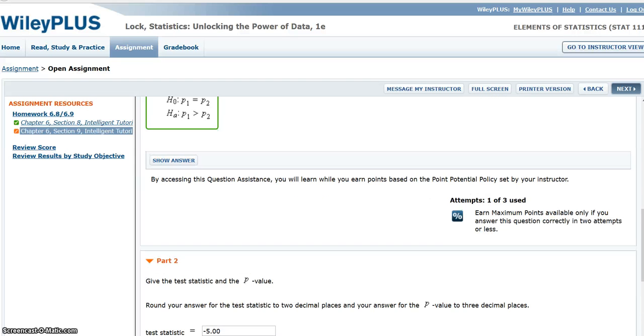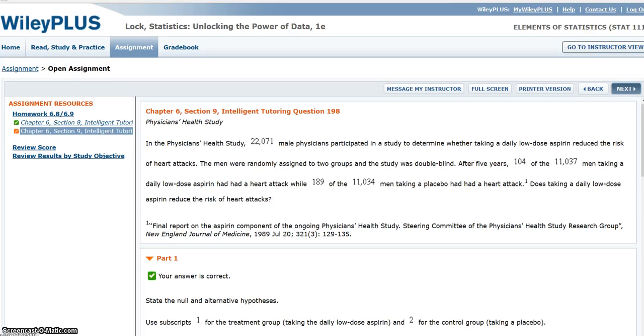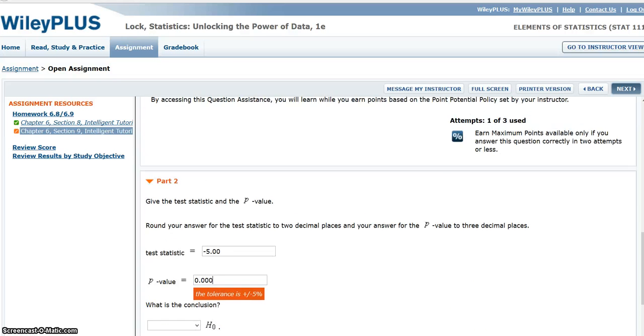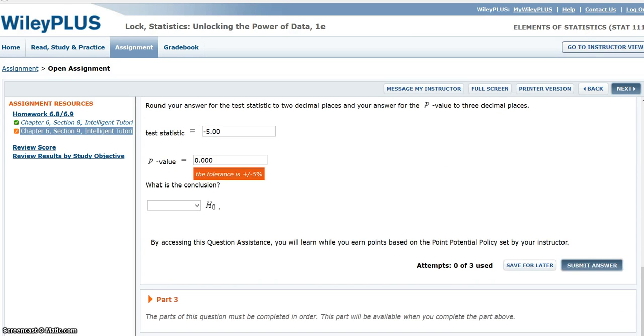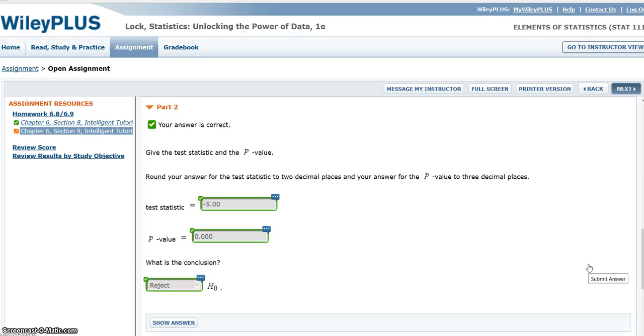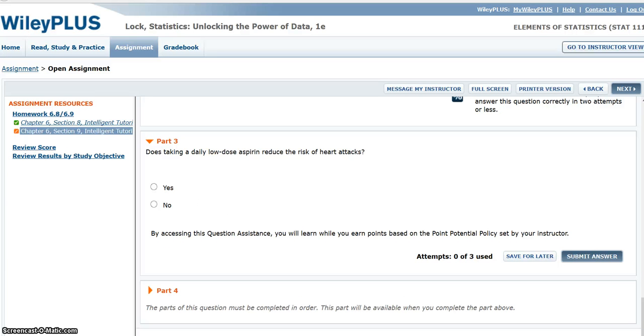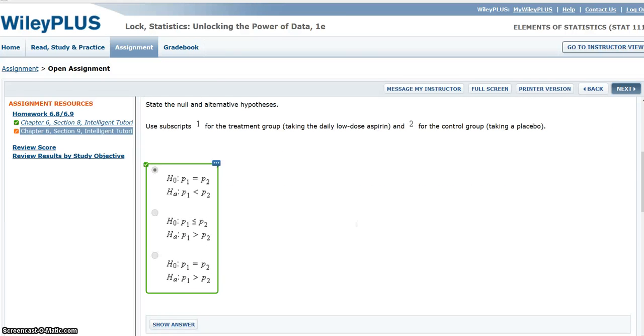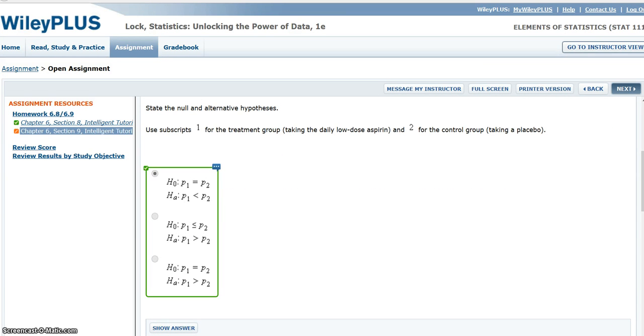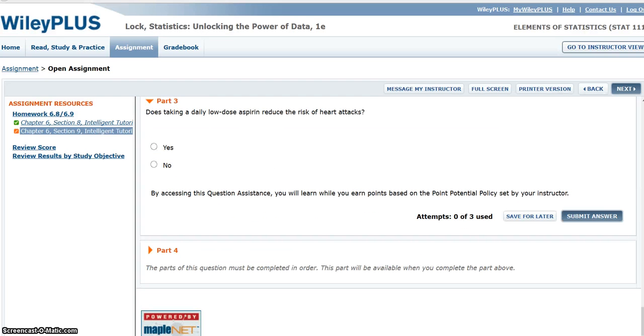With such a small P value, I'm testing at... it's not telling me what significance level, but at virtually any significance level, since it's 0, I'm going to reject the null hypothesis. And now, we want to know, does taking low-dose aspirin reduce the risk of heart attacks? Well, my null hypothesis was rejected in favor of the alternative, that the proportion with heart attacks is lower among people taking low-dose aspirin. So, yes, it does.